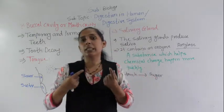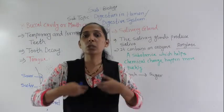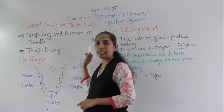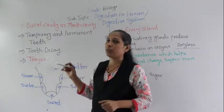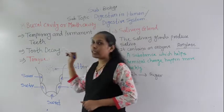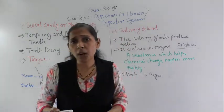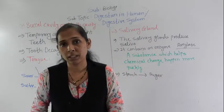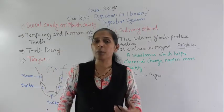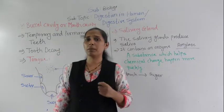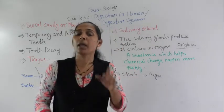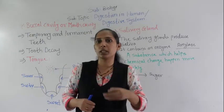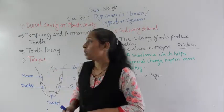Once the temporary teeth fall out, new teeth grow in their place, and that set of teeth is called permanent teeth — the second set of teeth. Permanent teeth may fall out as a person ages, at old age, or due to dental problems. Once permanent teeth fall out, they never come back; new teeth never grow in their place.